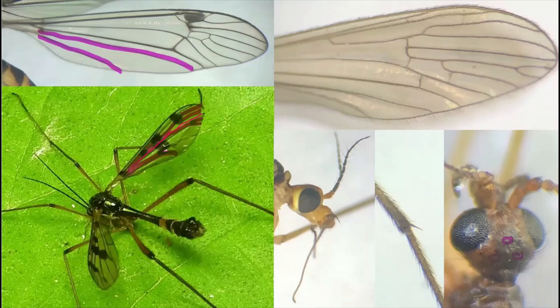If you've ascertained that your fly is a tipuloid, you must then look at the mouthparts. In the family Tipulidae, a common family of large crane flies, the palps are long and project far in front of the head. However, if you have one of the other three families, the palps are short and don't really extend further than the length of the head.